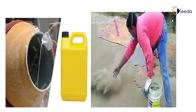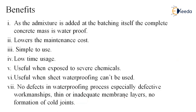It can be used during batching itself or as a powder shaken over the surface. Benefits: as the admixture is added at the batching plant, the complete concrete mass is made waterproof. It lowers maintenance cost, is simple to use — just mix it and leave it — and has low time usage. It is useful when exposed to severe chemicals, when sheet waterproofing cannot be used, and it overcomes defective workmanship. Issues with thin or inadequate membrane layers are overcome, there is no formation of cold joints, and a complete waterproofing of all the concrete is achieved.